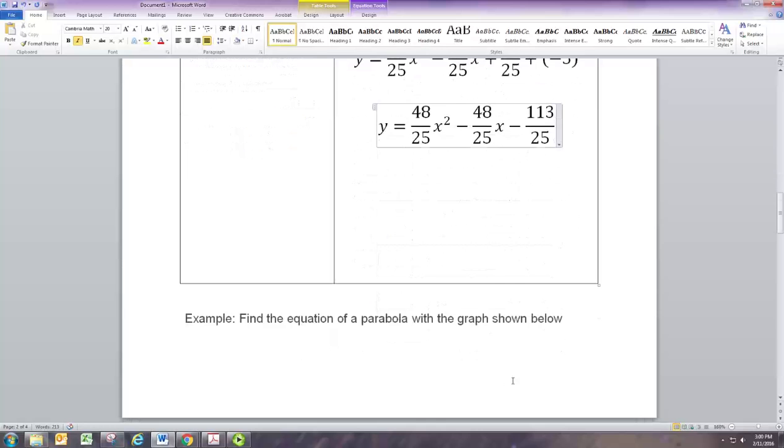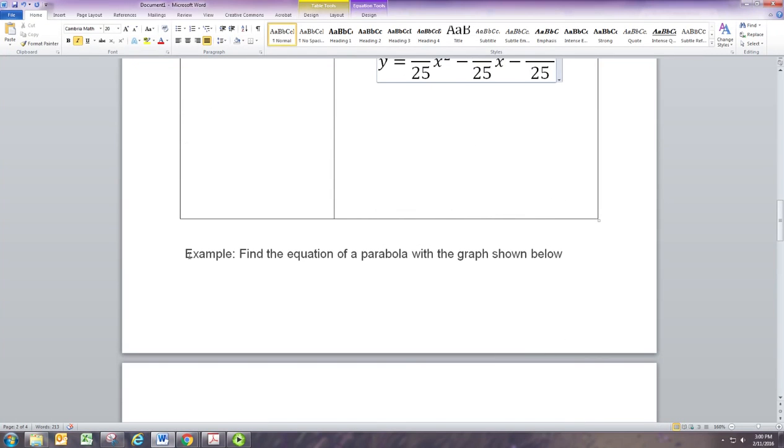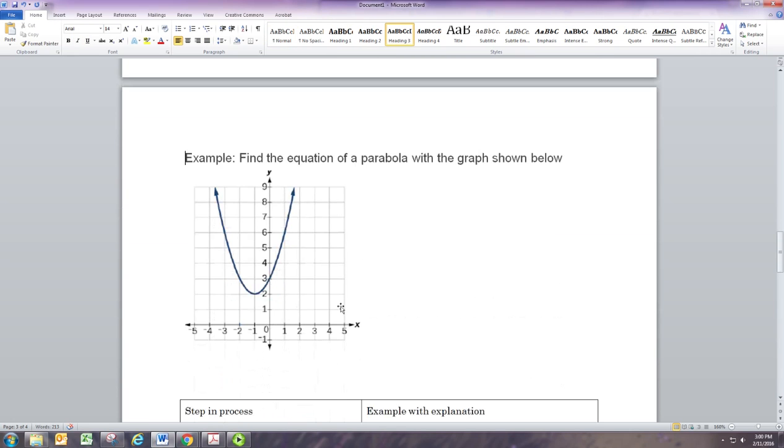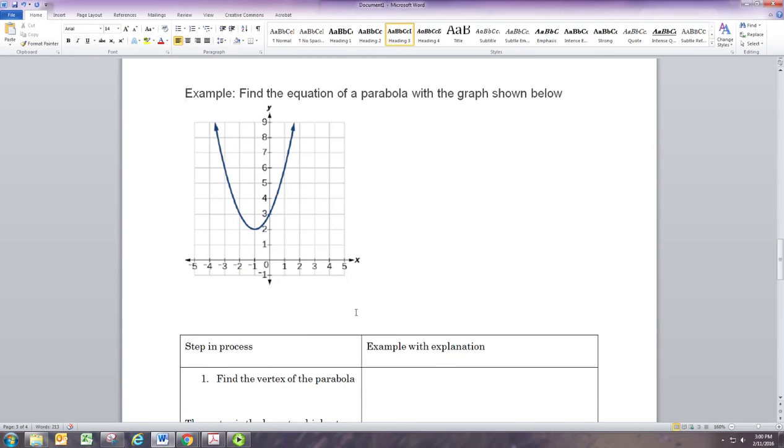Let's take a look at another example of finding the equation. This time, instead of giving information about it, we're given a graph. Again, the first step is to find the vertex. By inspection, we can see that the vertex is the lowest point on the graph, or if it opens down, it's the highest point.